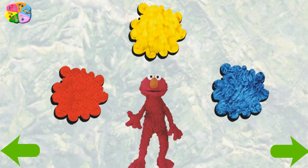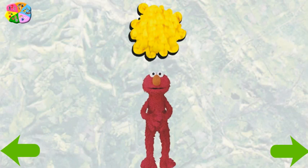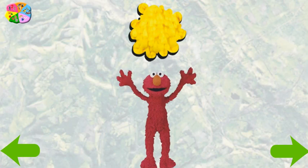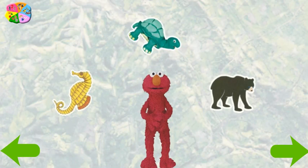Elmo will think of another color to find. Elmo's thinking. Elmo's thinking of the color yellow. That's right. You are one terrific color finder. You are such a good color finder that Elmo thinks you're ready to try something a little harder.